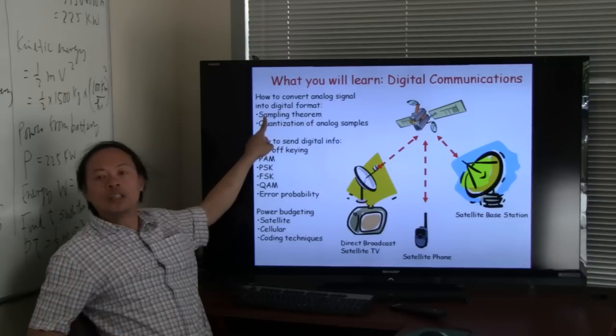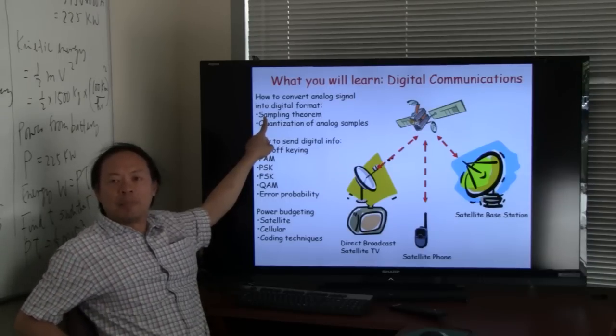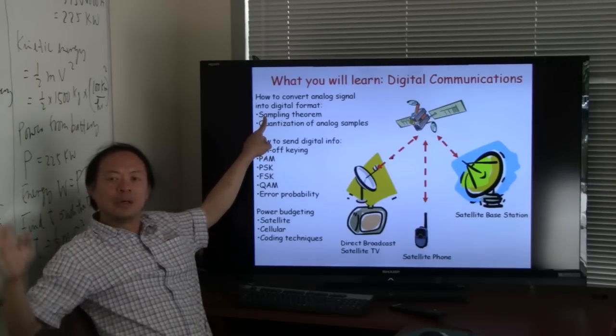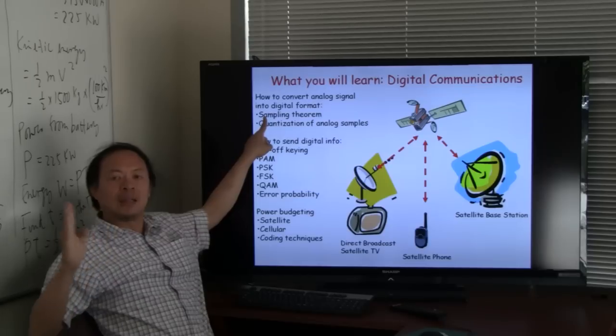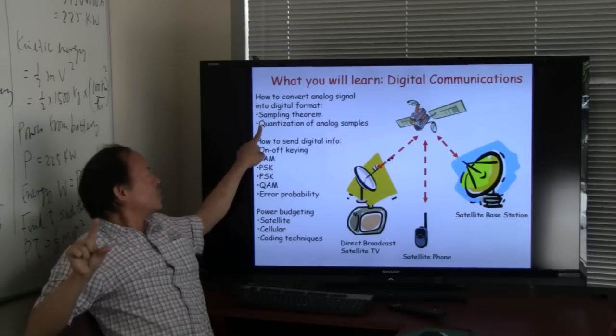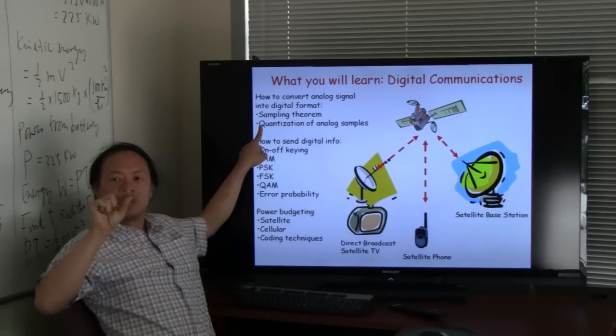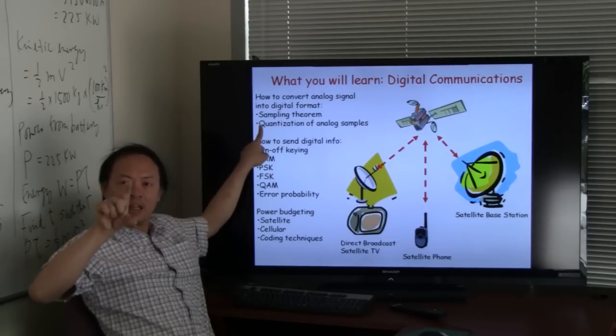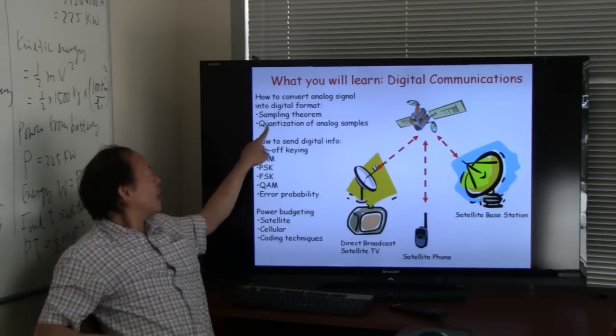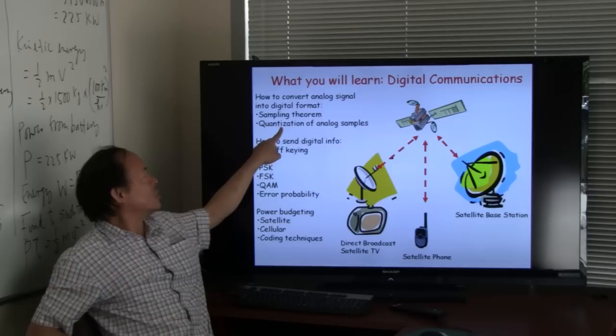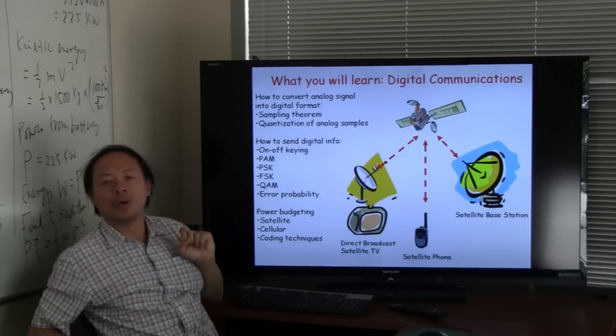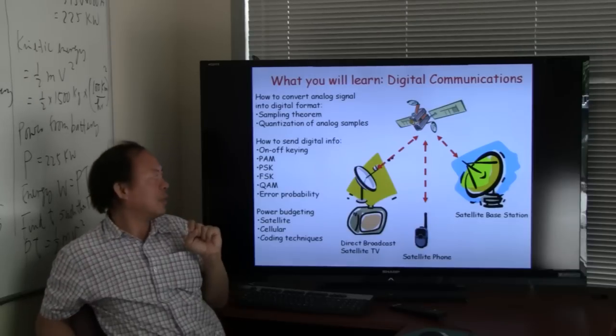For that, we are going to learn what is known as the sampling theorem so that we can turn the continuous time signal into a discrete set of samples. Once we get this discrete set of samples, we need to quantize these samples, which has an analog amplitude, into a digital format. And there we use what is known as quantization of analog samples. So we learn something about quantization theory.